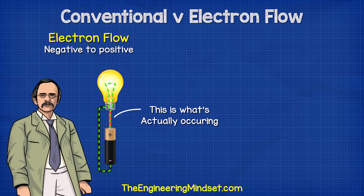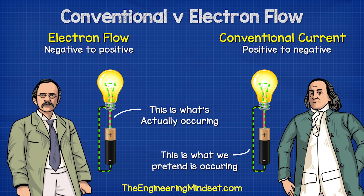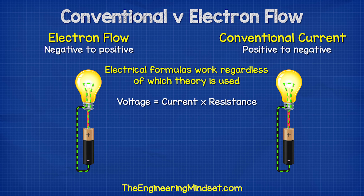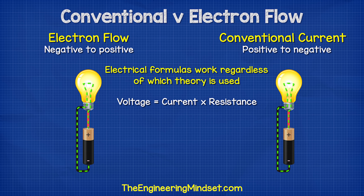What's actually occurring is electrons are flowing in a circuit from the negative to the positive terminal, and not the positive to the negative. However, it doesn't really matter what's moving inside the wire or in which direction, because the electrical engineering formulas we use do not take this into account, so they will still come out with the same answers.